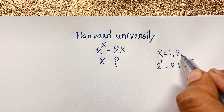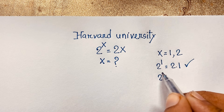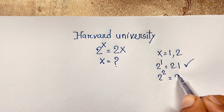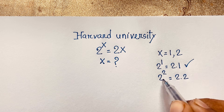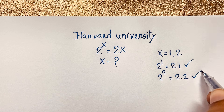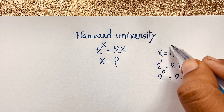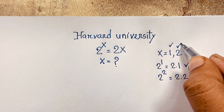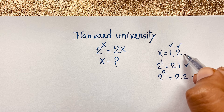Now if you think x is equal to 2, then 2 to the power 2 is equal to 2 times 2. This is 4 and this is 4. Left hand side and right hand side are both equal, so x equals 2 is also a correct answer.